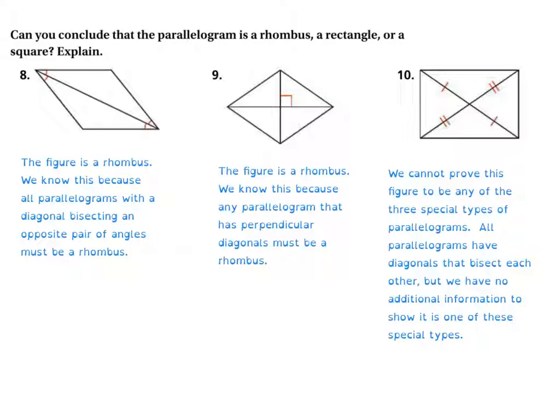We cannot prove this figure to be any of the three special types of parallelograms. All parallelograms have diagonals that bisect each other, but we have no additional information to show it as one of these special types. So, short answer, no. That's it. That's how you do these.